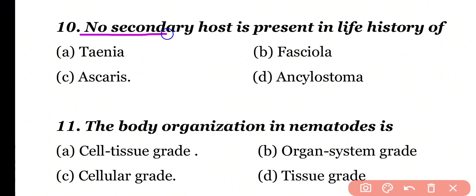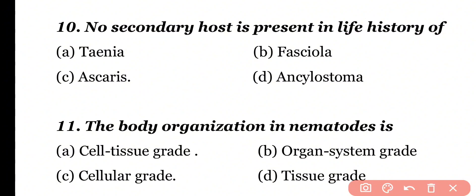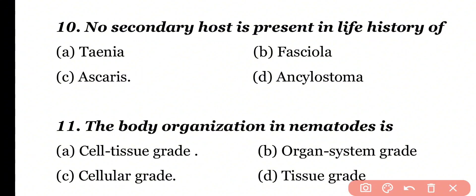Question 10: No secondary host is present in the life history of Taenia, Fasciola, Ascaris, or Ancylostoma. Correct answer is option C. Ascaris lumbricoides has only one host — that is human. There is no secondary host in the life cycle of Ascaris.